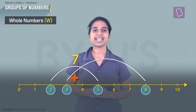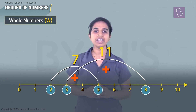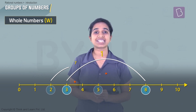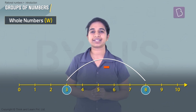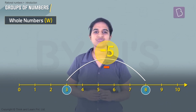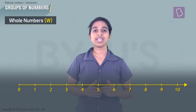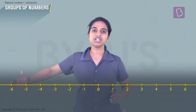Try three plus eight — that gives you eleven, which is again a whole number. So adding whole numbers still gives us whole numbers. But what happens if we subtract instead? We do three minus eight — that gives us minus five. Now minus five is not a part of our set of whole numbers.